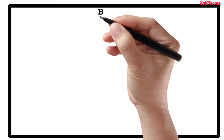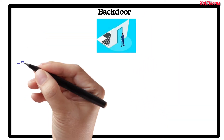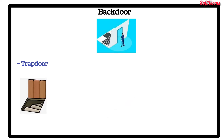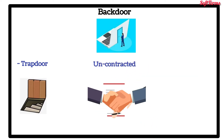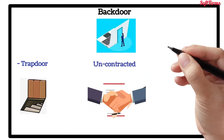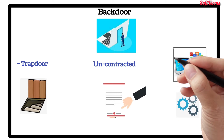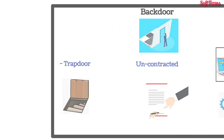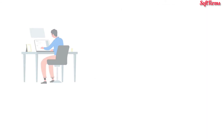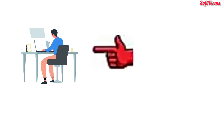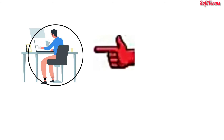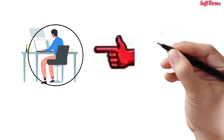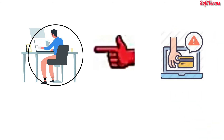Another type of malicious code is a backdoor, also known as a trapdoor. It is an undocumented way of gaining access to a program, online services, or an entire computer system. The backdoor is written by the programmer who creates the code for the program and is often known only by the programmer. A backdoor is a potential security risk.